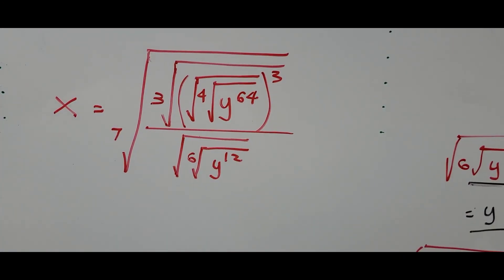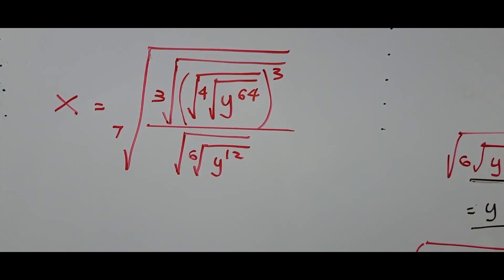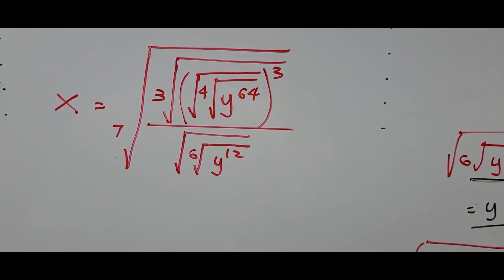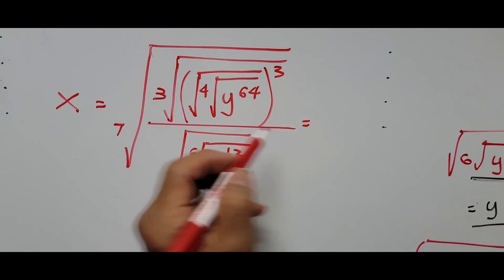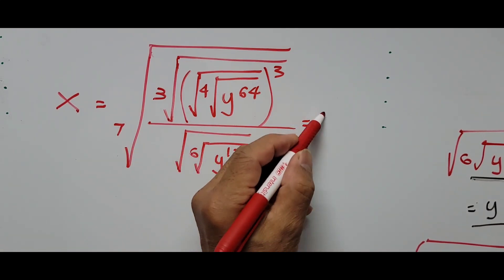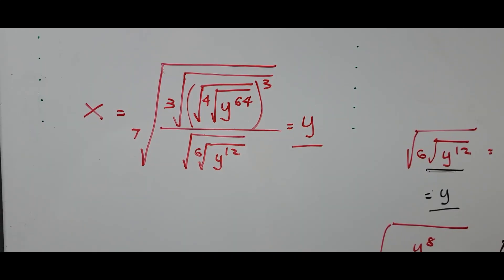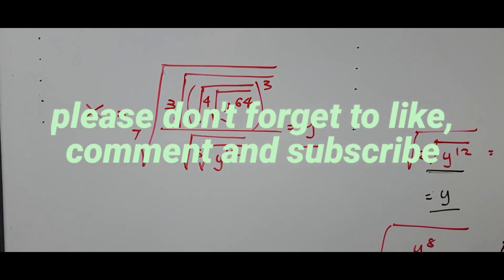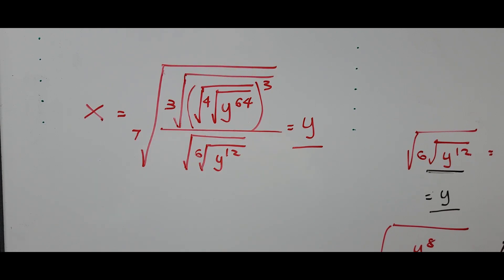After all the complexities of solving this complex radical equation, we came up with the simple answer: y is equal to y. That's all for today. Please don't forget to like, comment, and subscribe for more videos. I will see you in the next video. Have a great day, everyone. Thank you for your time. Bye.